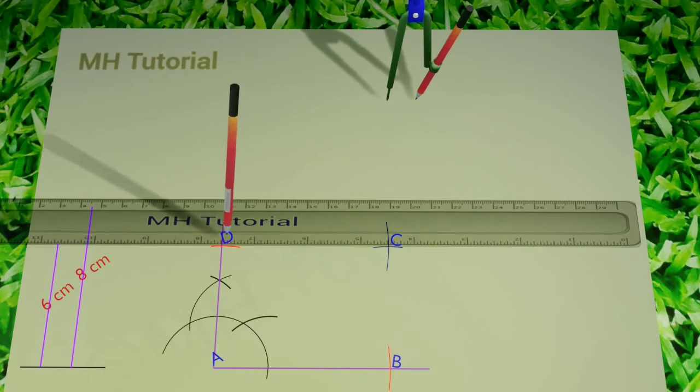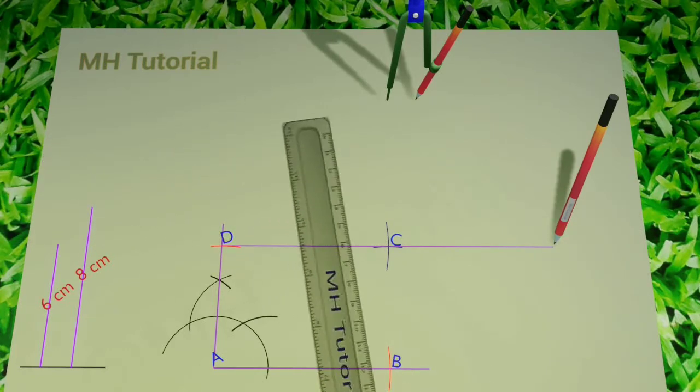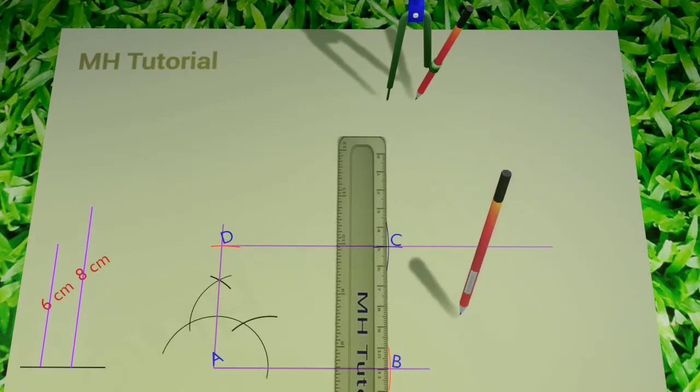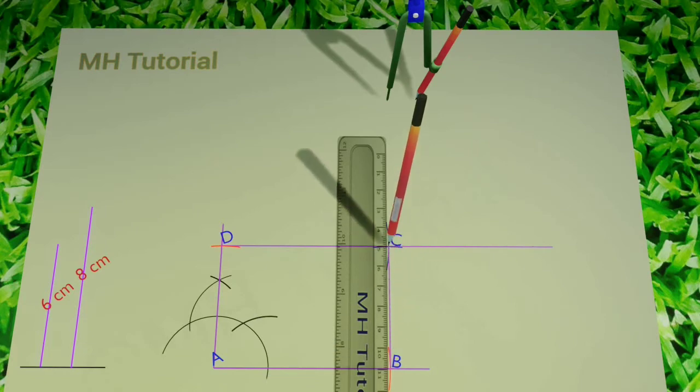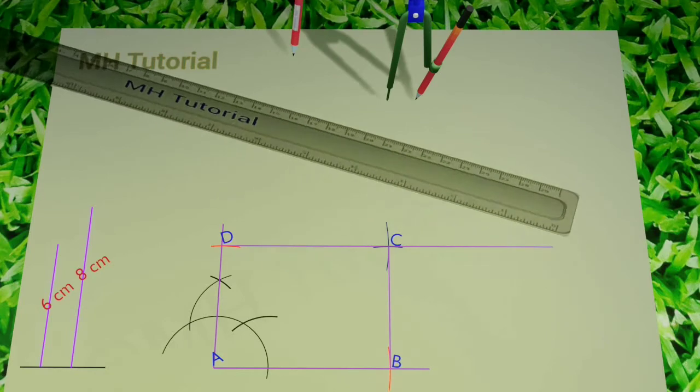D and C are first connected with a scale and a pencil and extended a little. Then C is connected to B. In this way, we have drawn the given rectangle.